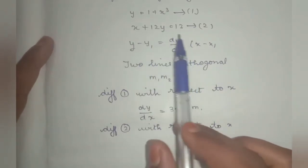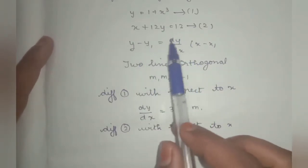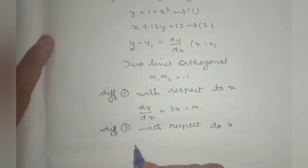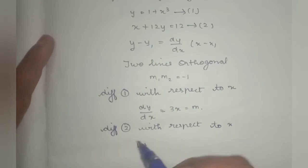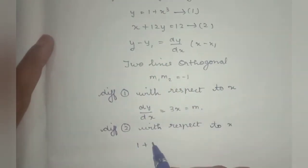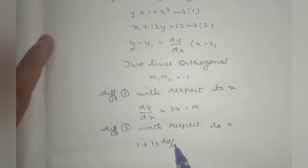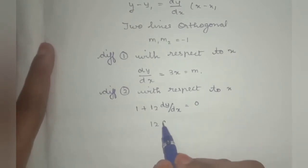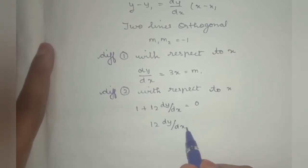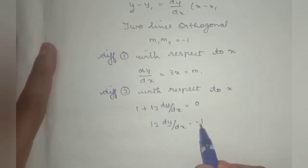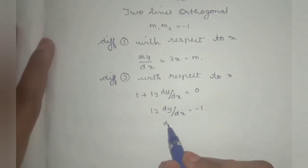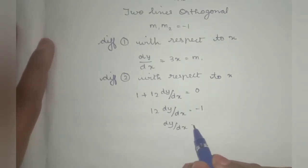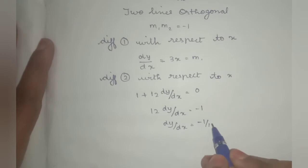Differentiate equation 2 with respect to x: 1 + 12 dy/dx = 0, so 12 dy/dx = minus 1, therefore dy/dx = minus 1 divided by 12. This is m2.